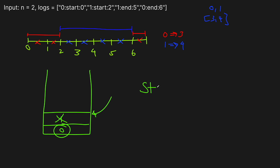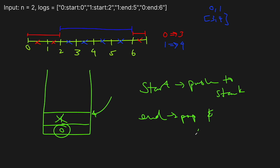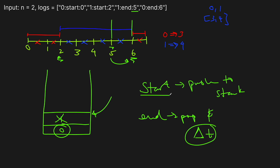So if we get a start, we push to the stack. If we get an end, we pop from the stack and find the delta of the time. You have to be a little careful: when you get an end it's actually inclusive. If a function ends at five and starts at two, you'd get three units by naive subtraction, but it actually ends at the end of five — so you need to account for that when calculating deltas. When you get a start, push it to the stack and track the time; when you get an end, pop it and calculate the delta.